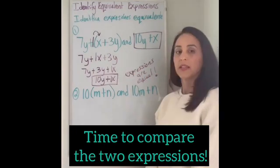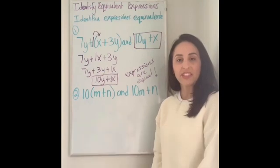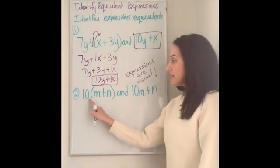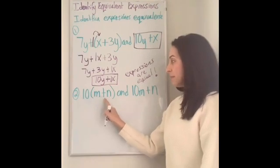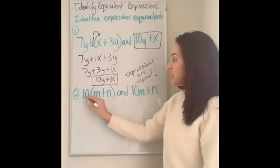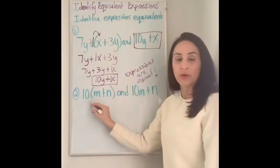Okay. Done. Let's try the next one. Problem number two, 10 parentheses m plus n and where I see and I'm going to ignore it. Ignore the rest for now. Distributive property because I see that there's parentheses.